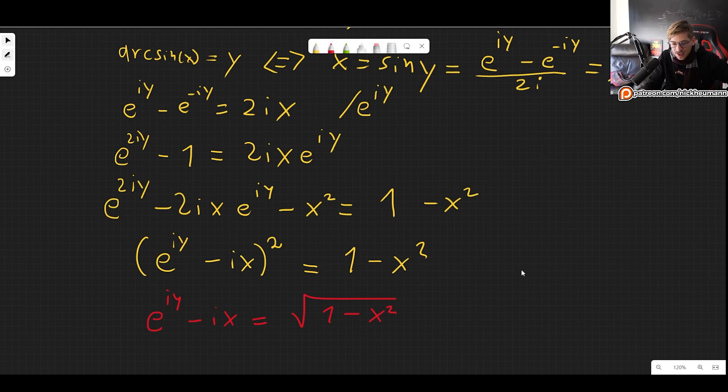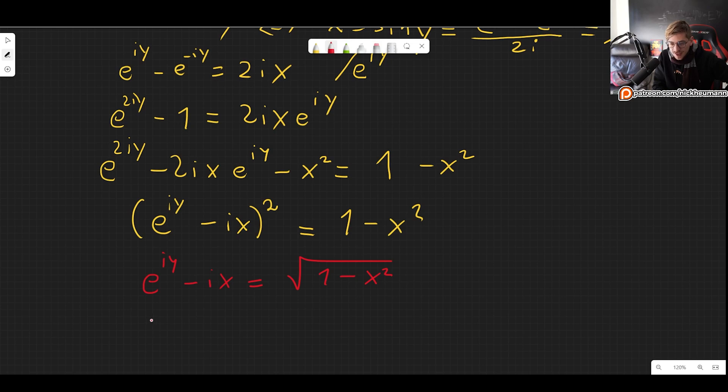And from here, we can now isolate the exponential, which is precisely what we wanted. So e to the iy, this is the square root of 1 minus x squared plus ix.